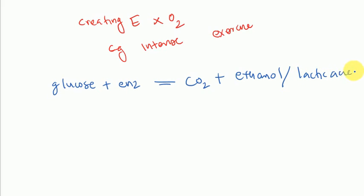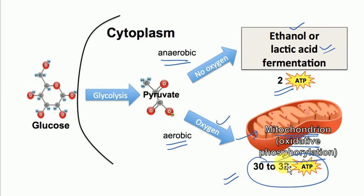The equation for anaerobic reaction is: glucose plus enzymes gives carbon dioxide plus ethanol, or lactic acid. Though anaerobic respiration does not produce as much energy as aerobic respiration — aerobic respiration produces around 32 ATP — anaerobic respiration produces only 2 ATP.